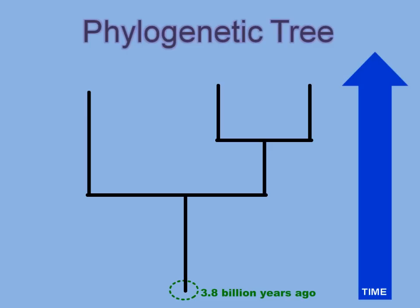As we move up the tree, we are moving from the past into the present. Fossil evidence indicates unicellular life evolved at least 3.8 billion years ago. As time went by, some members of populations experienced changes in their genetic material, which we call mutations. Some of these changes were so great that different species evolved, as shown by the branching in the tree, and new species arose again and again throughout time.